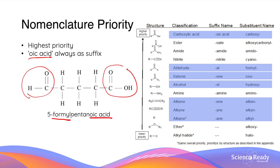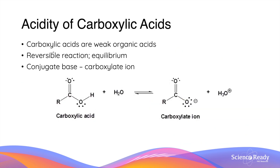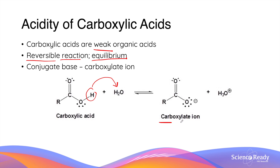As mentioned earlier, the main chemical property of carboxylic acid is that it is acidic in nature. They are specifically weak acids and therefore partially ionize. The ionization of carboxylic acids are reversible reactions that exist in a dynamic equilibrium. When ionized, carboxylic acids donate a proton to a water molecule to produce their conjugate base, the carboxylate ion, and produce a hydronium ion, causing the solution to become acidic.